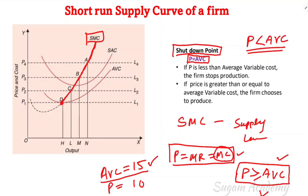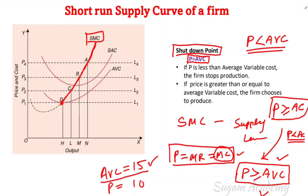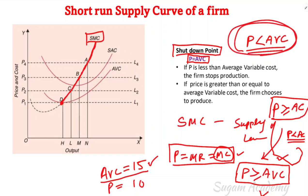If price is greater than or equal to average variable cost, then the firm will produce. If price is not greater than or equal to average variable cost, the firm will still produce as long as variable cost is covered. If price is less than average variable cost, then the firm will not produce. So this is about the short-run supply curve of a firm.